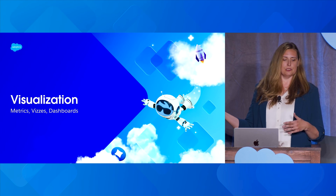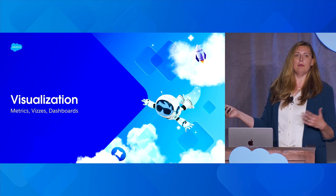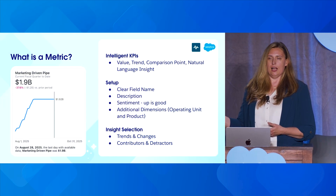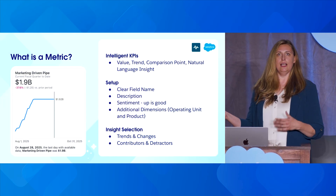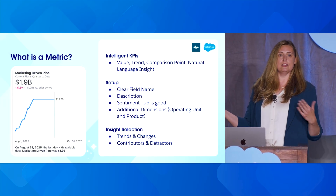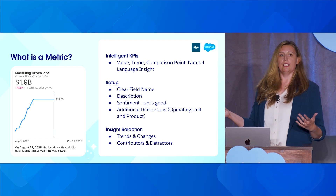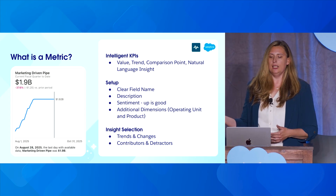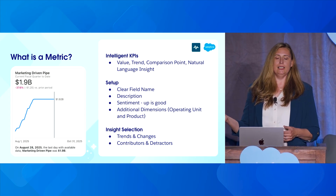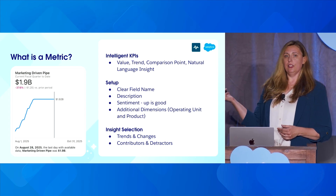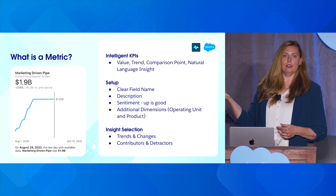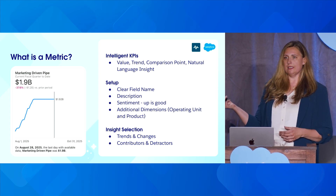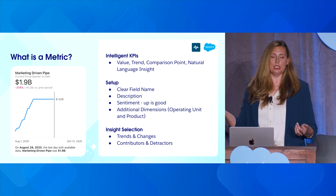Now let's talk about the visualization — this is how our users actually get insights from the data we've curated. What is a metric? In our semantic data model there are metrics. If you've built using Tableau Pulse, you'll be familiar with this concept. It's an intelligent KPI — it has your value, your measure, marketing-driven pipe amount charted over time with comparison time points and a natural language insight.